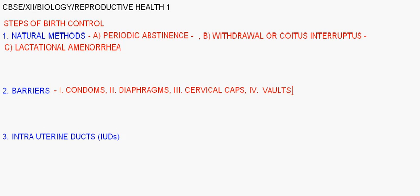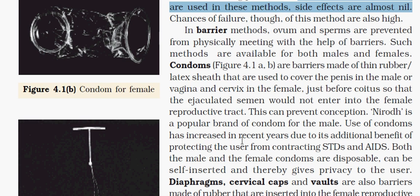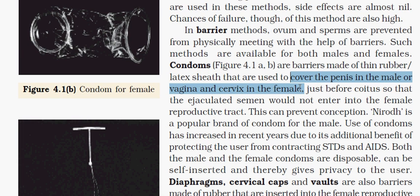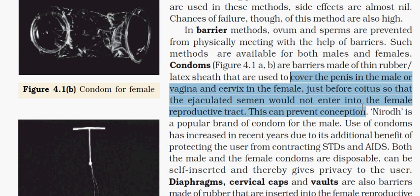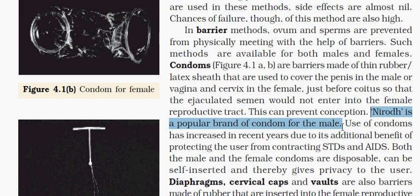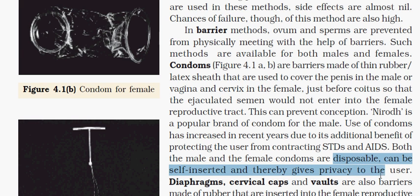Condoms are made of a latex sheath and cover the penis in the male or the vagina or cervix in the female, just before coitus, so that ejaculated semen does not enter the female reproductive tract. Nirodh is a popular brand used for males. Condoms also prevent STDs like AIDS, are disposable, and can be self-inserted, giving privacy to users.